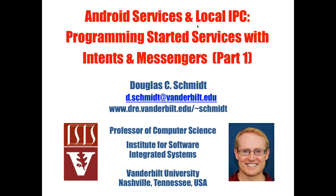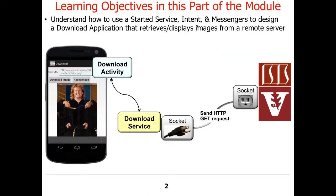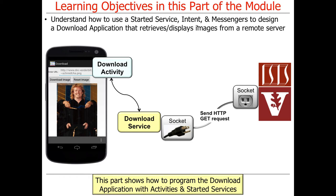Today we're going to start talking about how to program services. This will dovetail into assignment number four. The example we're going to use is not unlike your assignment, though it's different enough that you can't just cut and paste the solution. You'll have to do some thinking about how the pieces fit in. Basically it's a download application — you give it images and it downloads and displays them, using a service to do this.